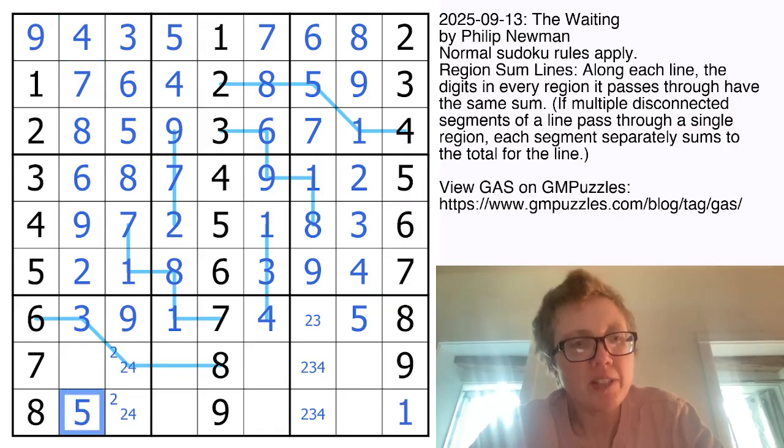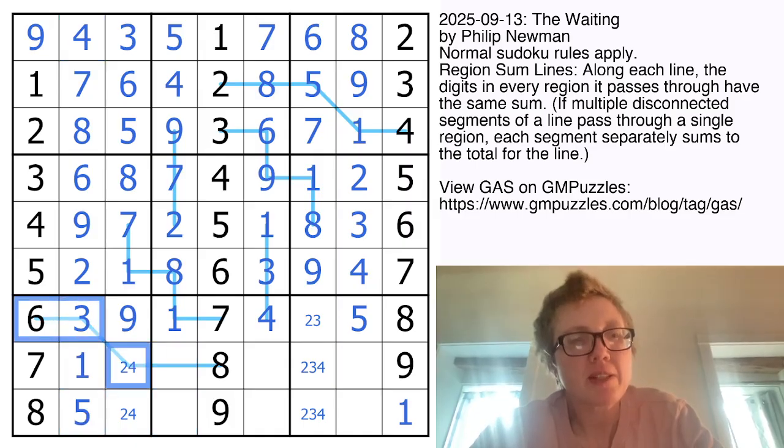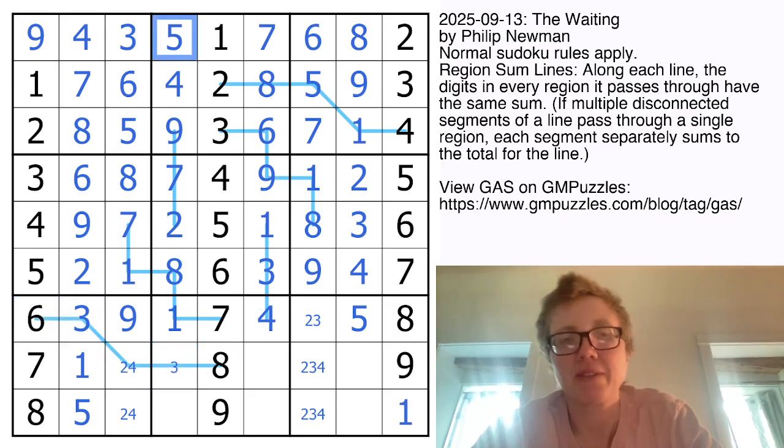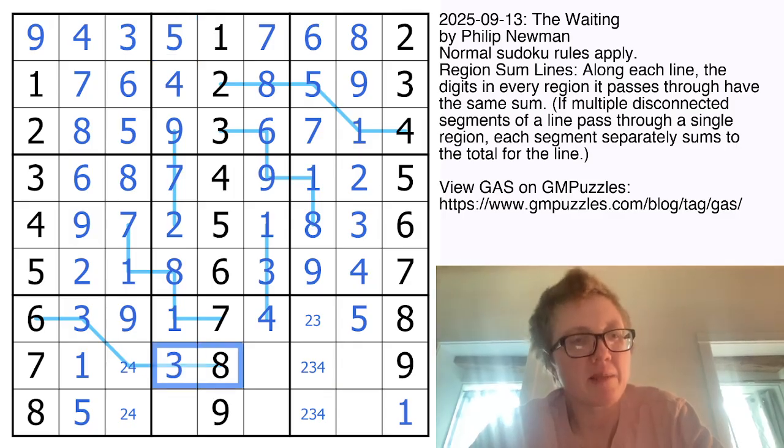Alright, now I need 1 and 5 here to finish off this region. And this is going to be either 6, 3, and 2, which makes this 11, which would make that a 3. Or 6, 3, and 4, which would make that 13, which would make that a 5, which is not possible because there's a 5 in the column. So that's a 3. These guys sum to 11. This is 6, 3, and 2. That makes this a 4.